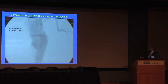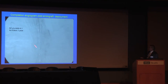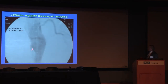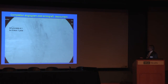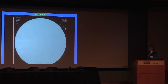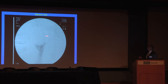Here's a patient that on completion shows a Type 1 endoleak — you can see it right here. This is a situation where immediately after deployment of the endograft you see a Type 1 endoleak and it needs to be treated. I like to do what I call the balloon test: you inflate the balloon and see if you can oppose the graft better to the aorta and eliminate the Type 1 endoleak.